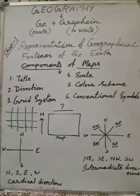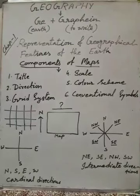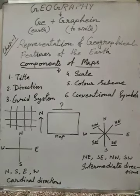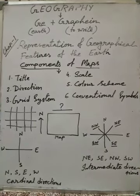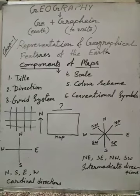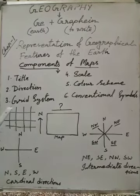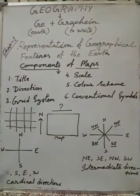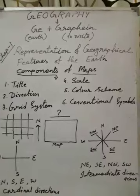First of all, what is the meaning of the word 'component'? Component means language. We know maps are different types — political, physical, thematic, large scale, small scale, many types. So if we want to describe, interpret, or understand those maps, we have to use some components or languages which help us do this. And the components are: number 1, title; number 2, direction; number 3, grid system; number 4, scale; number 5, color scheme; number 6, conventional symbols. So there are 6 components, and one by one I am going to talk about these 6 components.